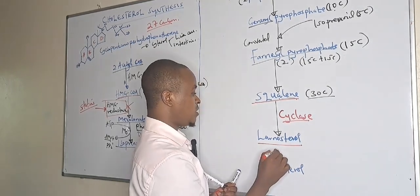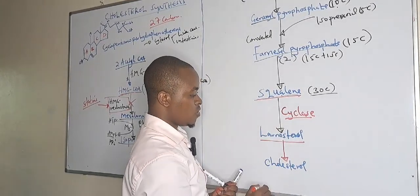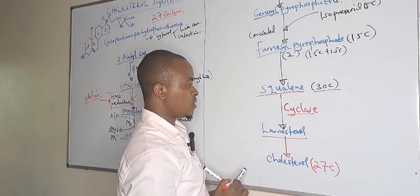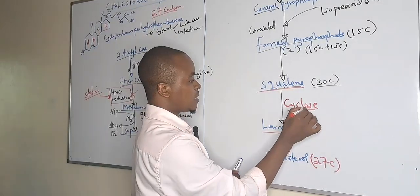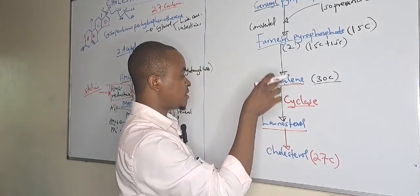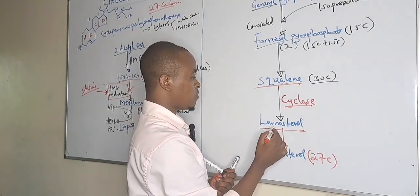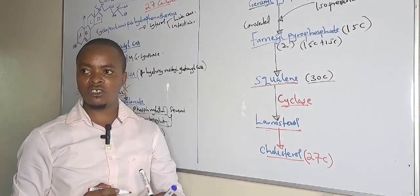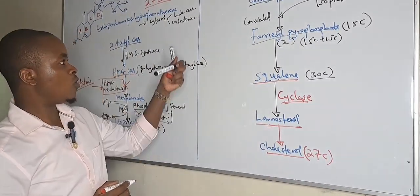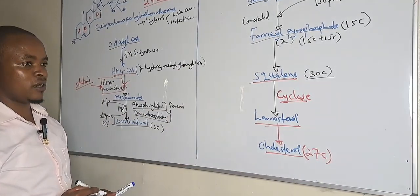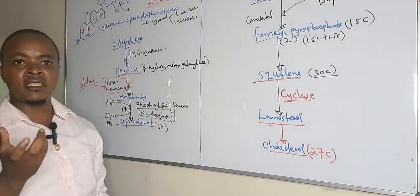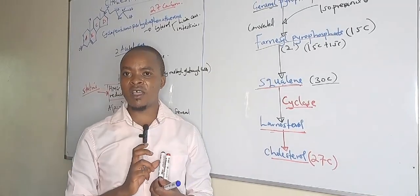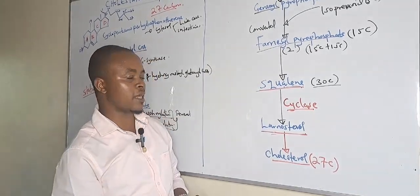It is lanosterol that is converted into cholesterol, which is a 27-carbon compound. This is how cholesterol is synthesized in the liver. We know that foods like egg yolk, meat, and butter — animal products — contain cholesterol, but it is also synthesized in the liver.